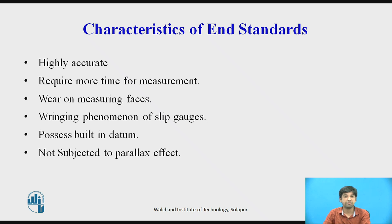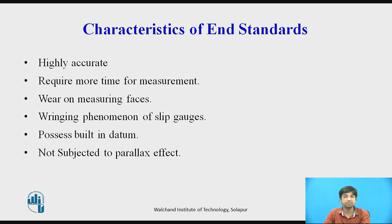They require more time for measurement and measure only one dimension at a time. They are subjected to wear on their measuring faces. Group slips can be rung — if two slip gauges are forced against each other on measuring faces, because of contact pressure, gauges stick together and considerable force is required to separate these blocks. One gauge is placed at 90 degrees to the other using light pressure and then rotated until the blocks are brought in line together to build up a given size.